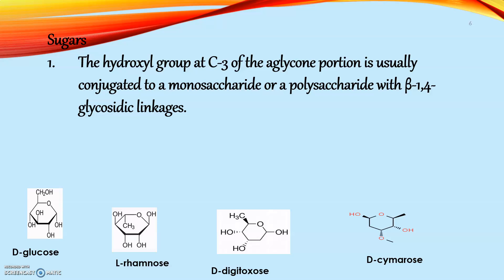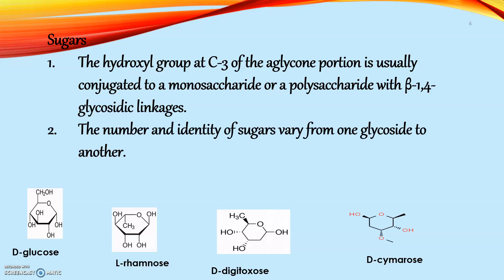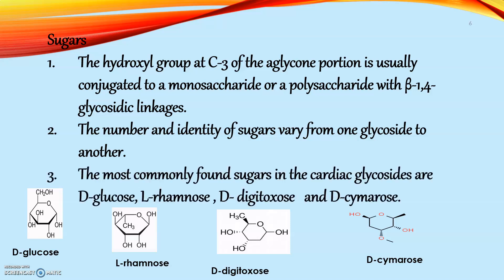Now, moving to the sugar portion. The hydroxyl group at C3 of the aglycone portion is usually conjugated to a monosaccharide or polysaccharide with beta-1,4 glycosidic linkages. The number and identity of sugars vary from one glycoside to another. The most commonly found sugars in cardiac glycosides are D-glucose, L-rhamnose, D-digitoxose, and D-cymarose.